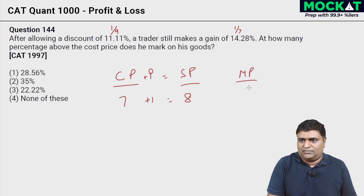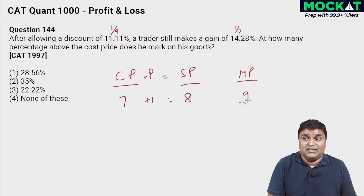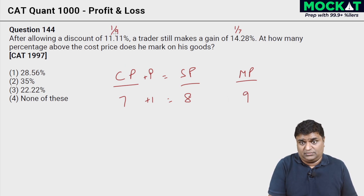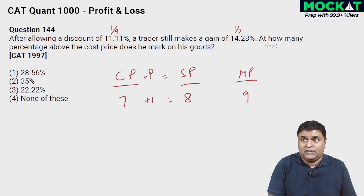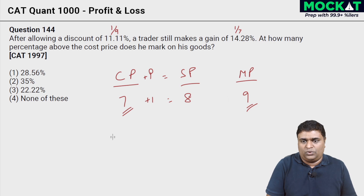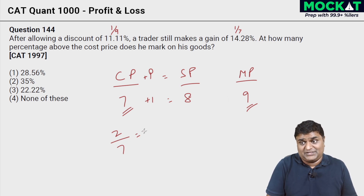A discount of one ninth: if mark price were 9 rupees, one ninth of 9 is 1 rupee. Remove that discount and you get 8 rupees selling price. So it's simply 7, 8, 9. The mark-up above cost price is 9 minus 7 equals 2 rupees over cost price 7. Two by seven is double of one seventh, which is 28.57 percent. Closest answer is option 1.